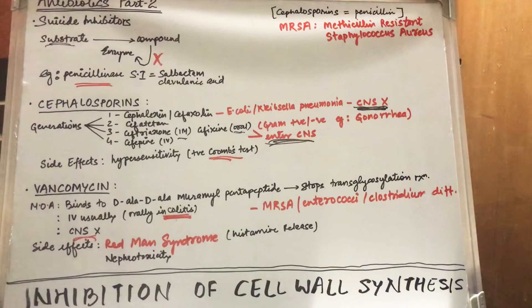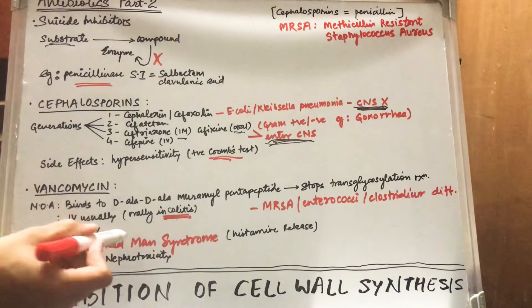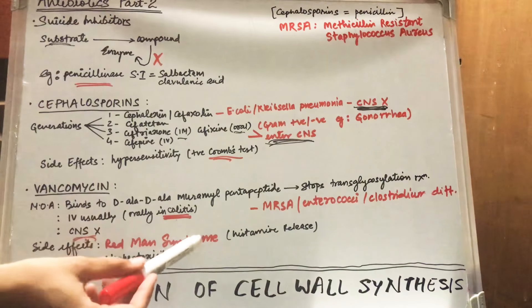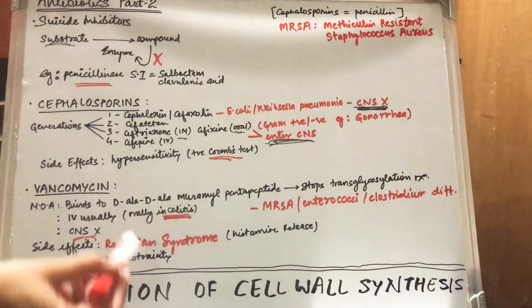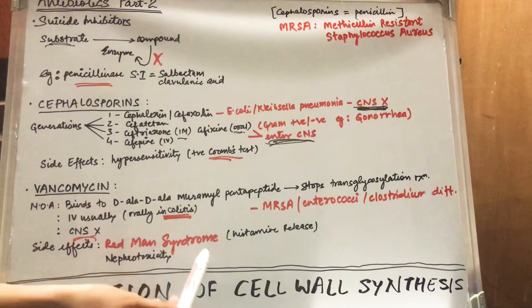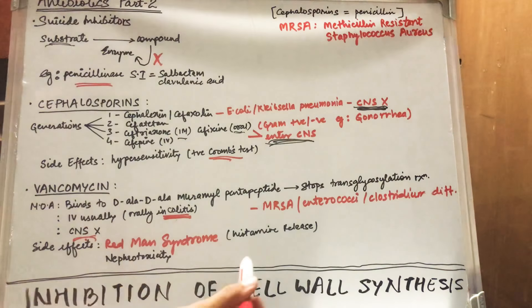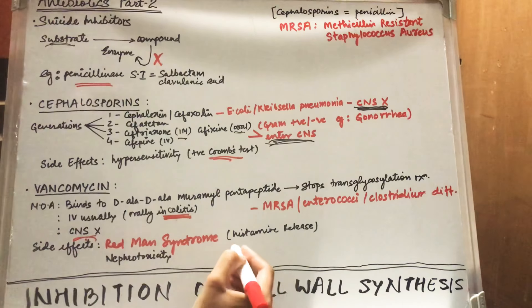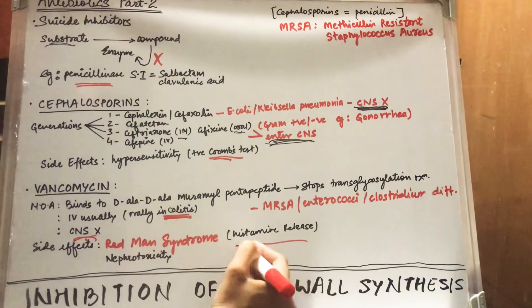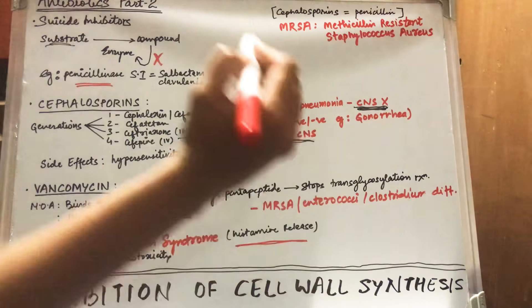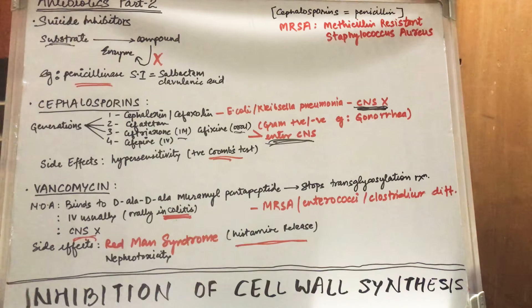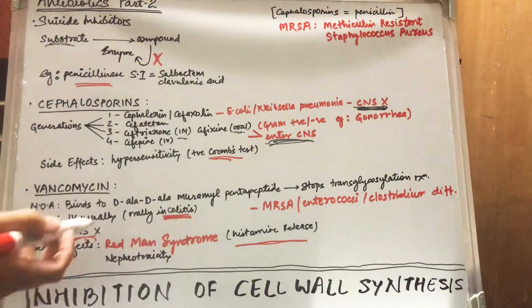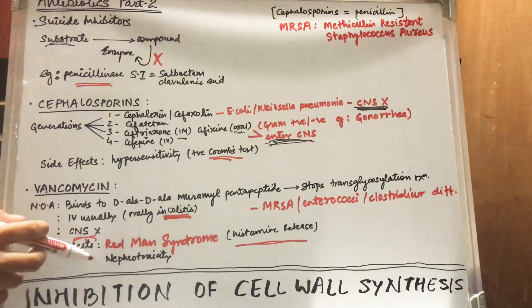The side effects of vancomycin are very interesting. You will see a person with a red body — they will look like a red apple. This is called red man syndrome, and it occurs because of histamine release. The body secretes more histamine, causing the person to appear red.